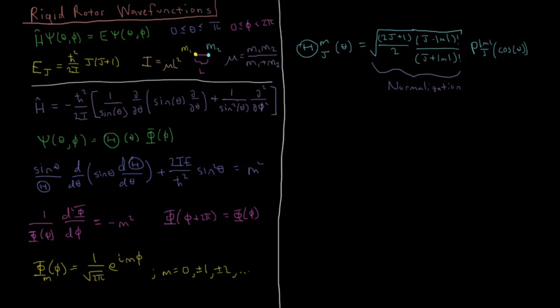And this other function here, this part which we have not encountered before, this is called the associated Legendre function. So you might have heard of Legendre polynomials before. They're things that come up for a lot of problems that involve spherical symmetry, like the rigid rotor.